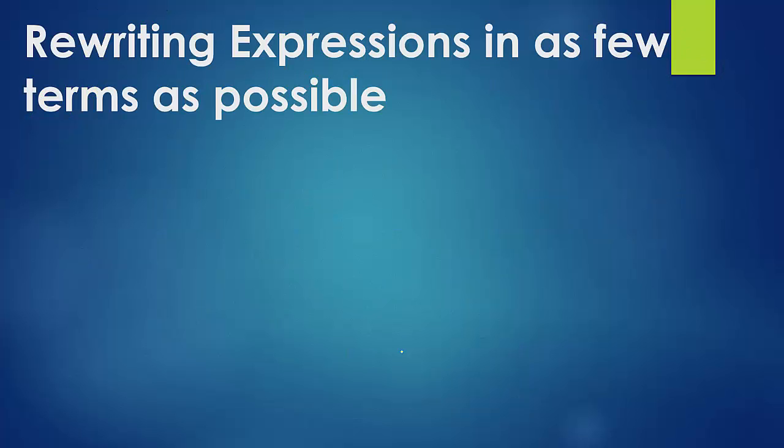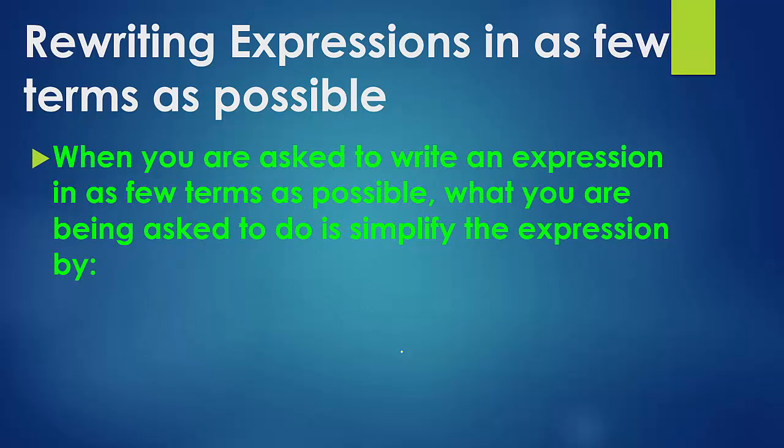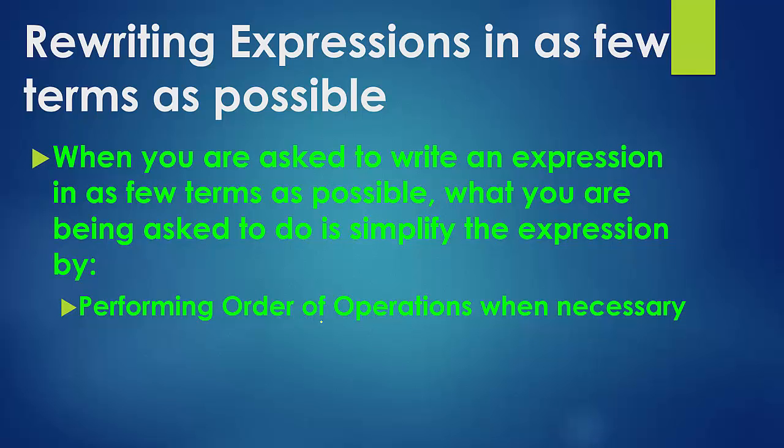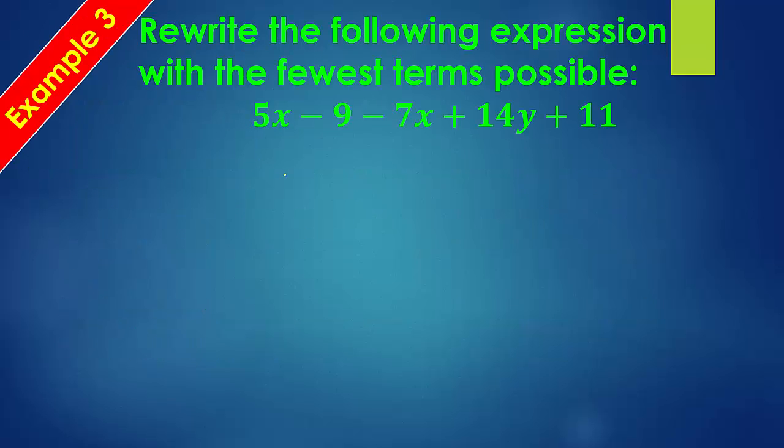All right, so let's move on to the new stuff. So rewriting expressions in as few terms as possible. It's basically, when you're asked to do this, all you're being asked to do is perform order of operations when necessary, it's not always necessary, and then combine like terms. That's it. So, for example, here we have another example, rewrite the following with the fewest terms possible. So I've got my expression here, and I'm looking for like terms. So circle that and the sign next to it. This doesn't have a sign, so that's a positive 5x, and I look and I see if there's any other x's. Well, there is right here.